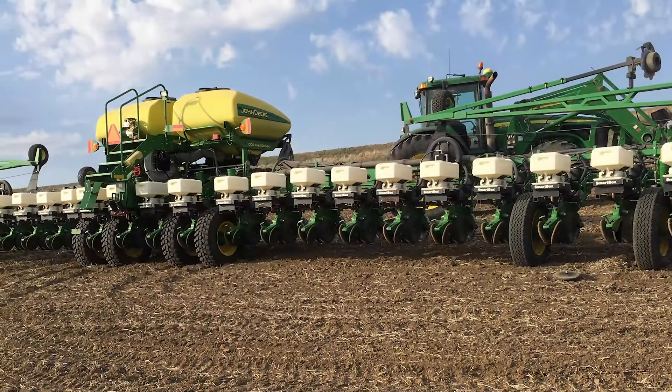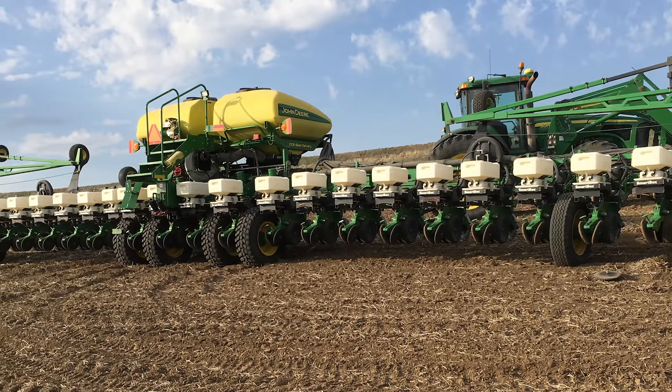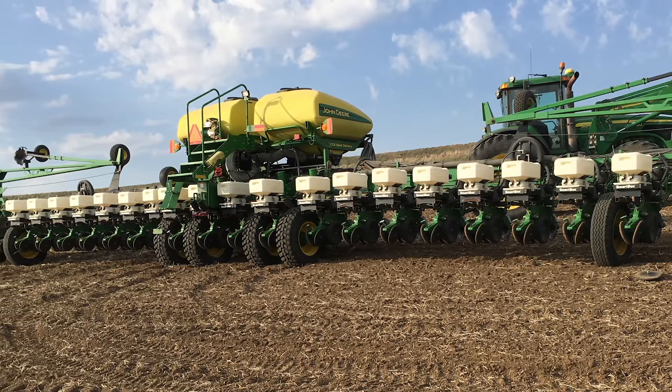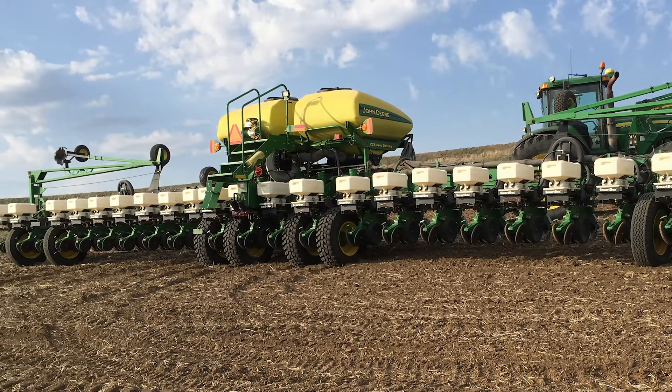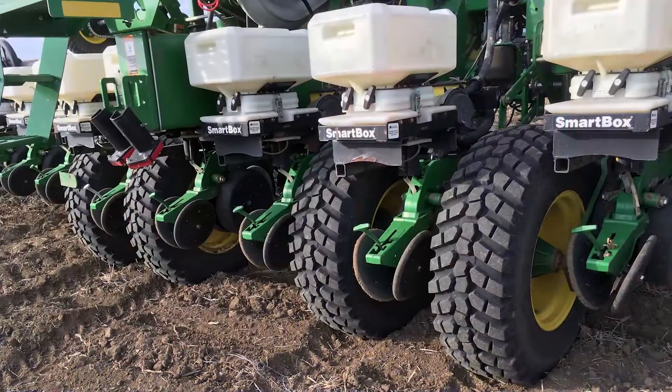Command Float Tires are an innovative solution to a common problem growers are facing with John Deere 1770 and 1790 bulk fill planters. The narrow OEM tires can cause pinch row compaction due to the weight of the seed in the bulk fill CCS tanks when full of seed.